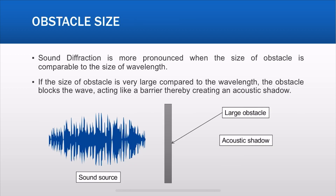Sound diffraction is more pronounced when the size of the obstacle is comparable to the size of the wavelength, as we saw in the previous calculation. Consider a sound source on the left and a large obstacle in the center. The obstacle size is very large compared to the wavelength of the sound, so the obstacle typically blocks the sound acting like a barrier — there is no sound on the other side from the diffraction perspective. Hence, there is an acoustic shadow on the other side.